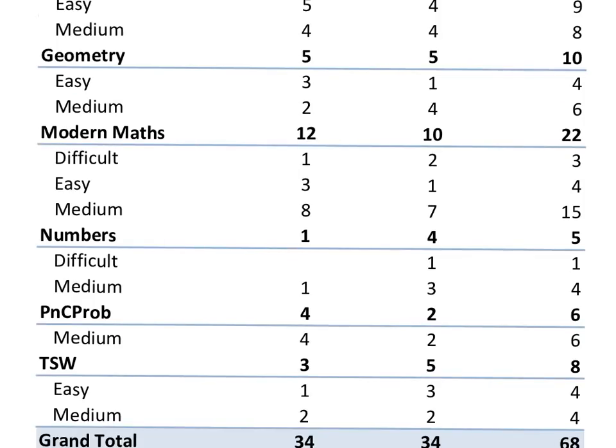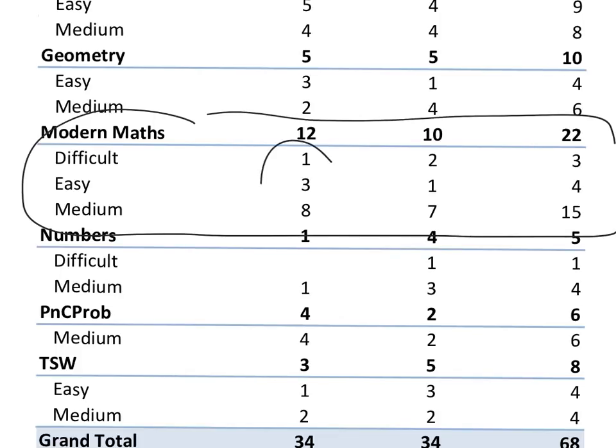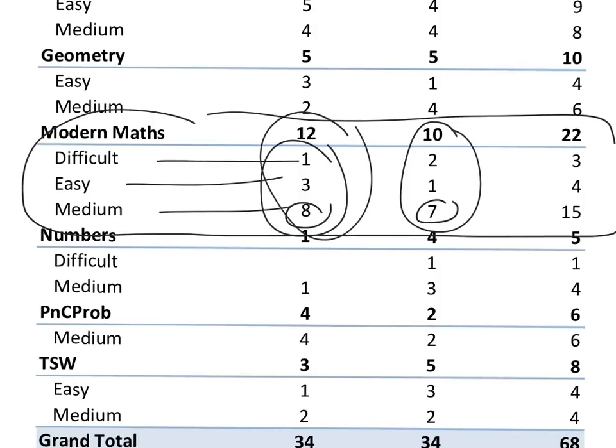So the level of difficulty, why is modern maths, there were 12 questions in the first slot. So 1 difficult, 3 easy, 8 medium. So level is not that easy. Most of the questions will be medium. Slot 2, there were 10 questions: 2 difficult, 1 easy and 7 medium. This is one of the most important areas of the CAT exam. So you cannot ignore this area.